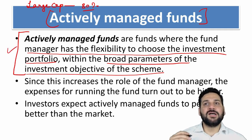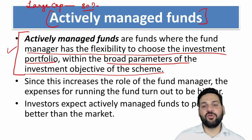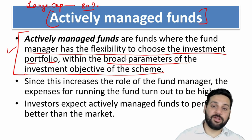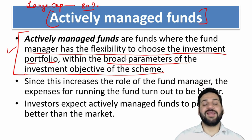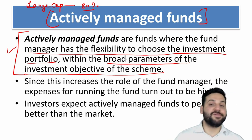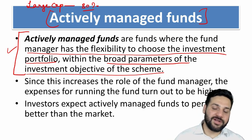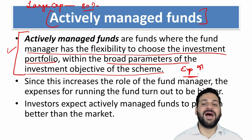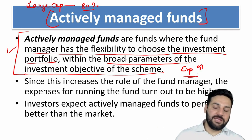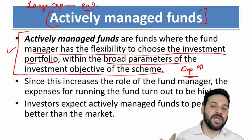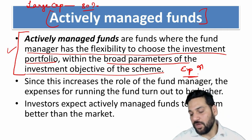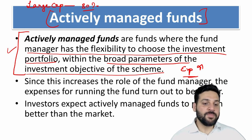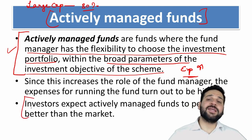Obviously the expense ratio is going to be high in actively managed funds because the fund manager and his team are analyzing various stocks and making decisions. The expense ratio of actively managed funds is higher than passively managed funds because the whole team of fund managers is working to select the stocks and bonds.